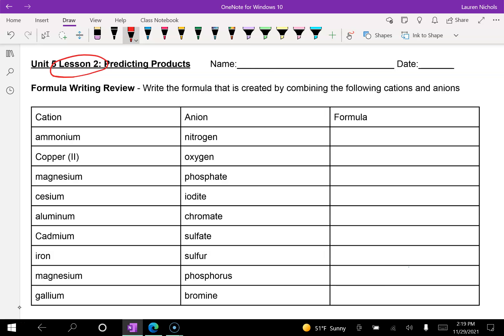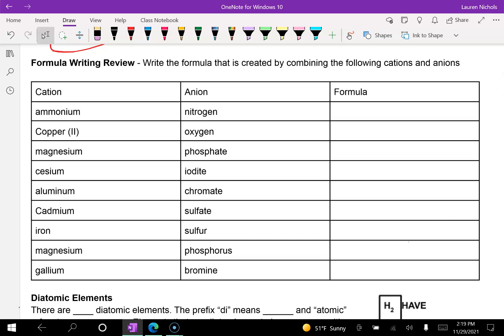The first thing you're going to need to make sure that you understand is how to write formulas for ionic compounds. So just as a reminder, if you have a cation and an anion and you're combining them to write the formula, your charges have to balance.